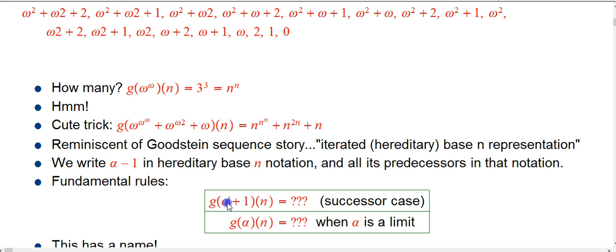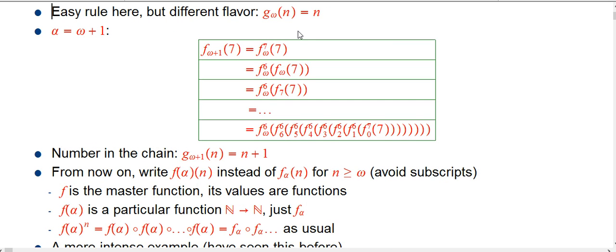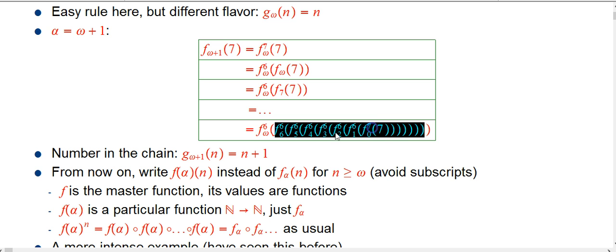Suppose I know g of alpha for some alpha, and I want to say: what's g of the next one, the successor ordinal? One place where we did that was we knew that g sub omega of n was just n — that was the first place we got actual n dependence. When we looked at omega plus 1, we used the rule for the fast-growing hierarchy: f omega plus 1 is immediately expanded in terms of the previous one, giving us one other kind of function as a leftover. So g of the successor is just that number plus 1 — it always adds one thing to the chain.